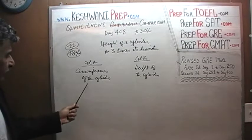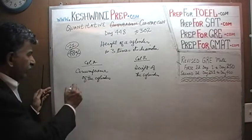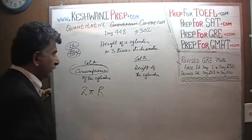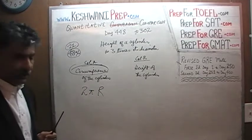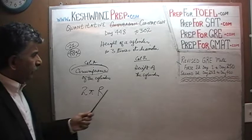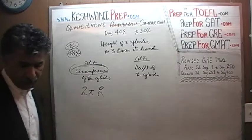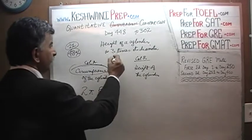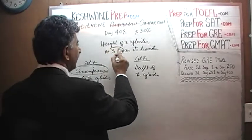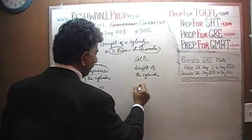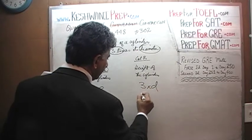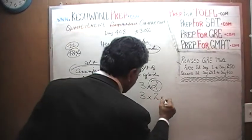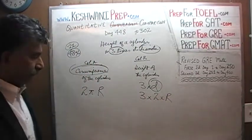How do we find the circumference of the cylinder? Circumference is very straightforward. Circumference is simply 2πr. And height — we are told height is 3 times the diameter. Height is 3 times the diameter, and of course diameter is just 2 times r. That is the diameter.